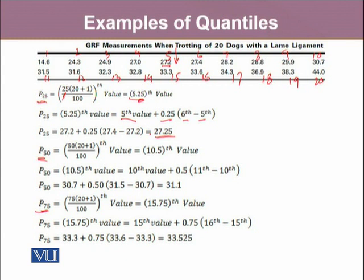In a similar way, this was done for the 50th percentile and 75th percentile, where we got 50th percentile is 10.5th value, where 10.5th value is after the 10th value and before the 11th value. It turned out to be 31.1, which is apparently in the middle of 30.7 and 31.5. Similarly for the 75th percentile, it is some value between 15th observation and 16th observation, and this value turned out to be 33.525.